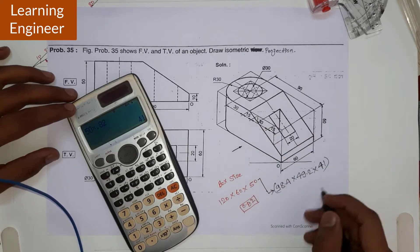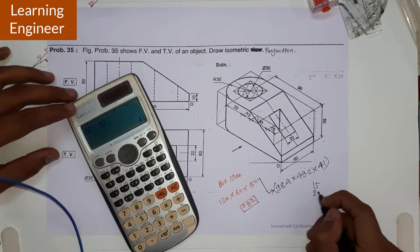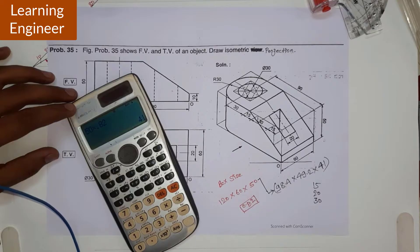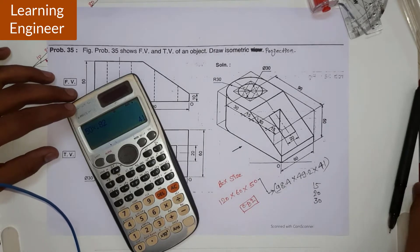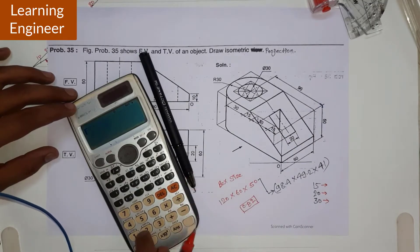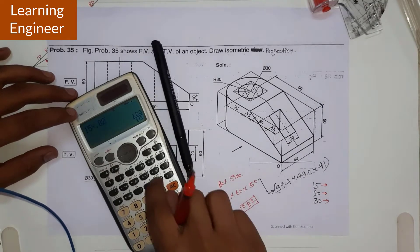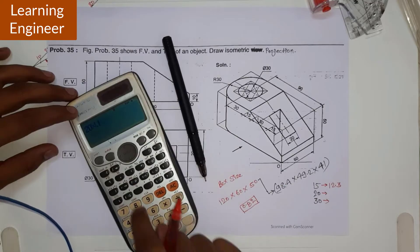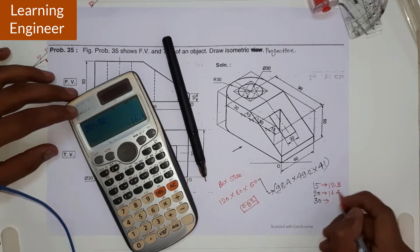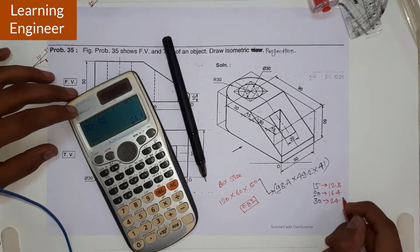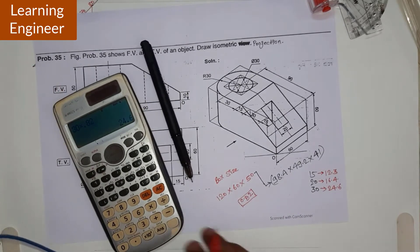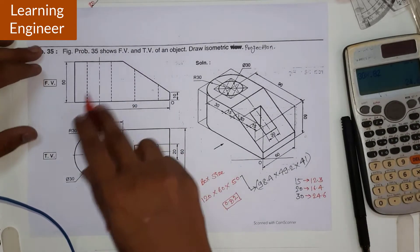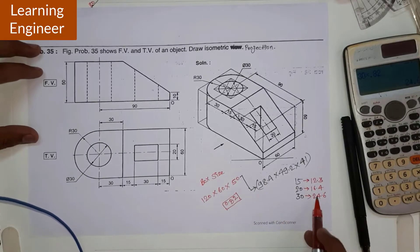We mark dimensions 15, 15, 30, and 15, 20, 30 — any other dimensions that need to be converted to isometric scale by multiplying 0.82. We have already calculated all the values: 15 gives 12.3 (approximately), 20 gives 16.4, and 30 gives 24.6. This is how we convert all true scale dimensions to isometric scales.